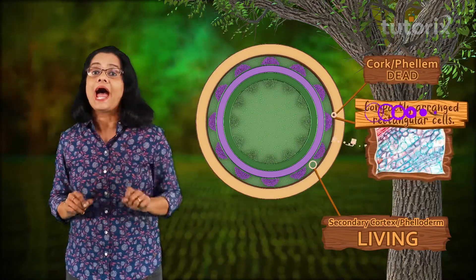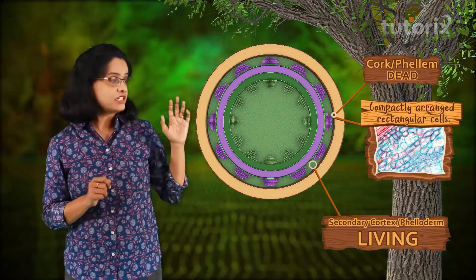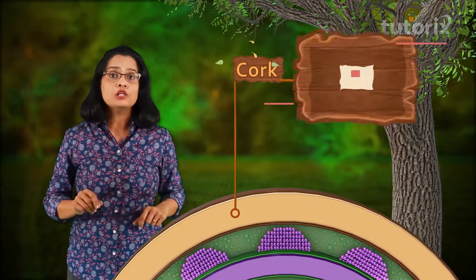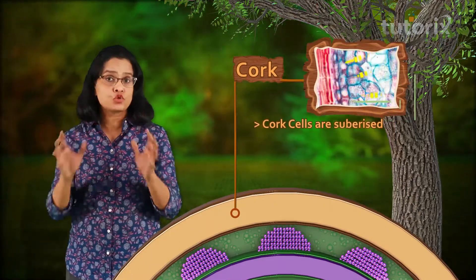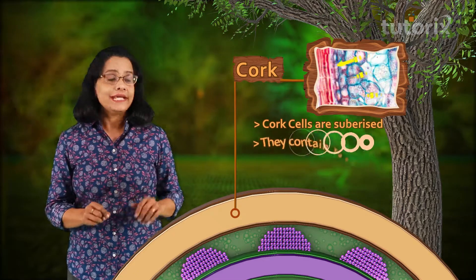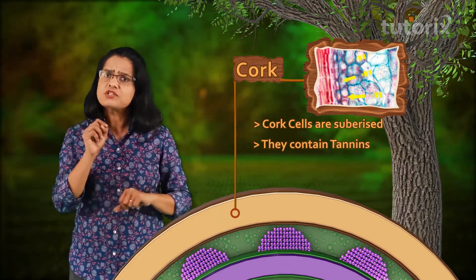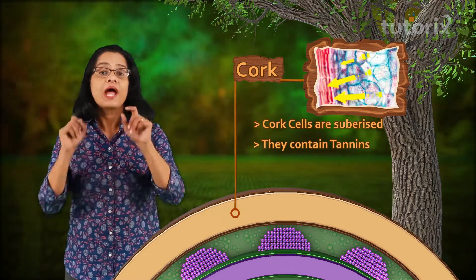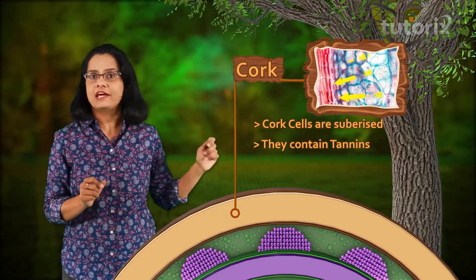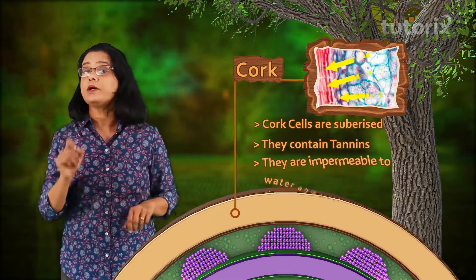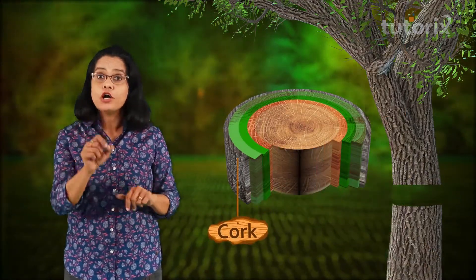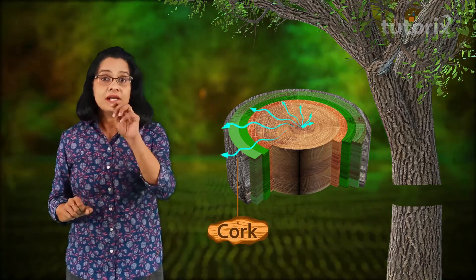The walls of cork cells are suberized. They also contain tannins, which give cork cells a brown or dark brown color. Because of the presence of suberin in their walls, cork cells are impermeable to water and gases, which makes cork very useful in preventing water loss from the plants.